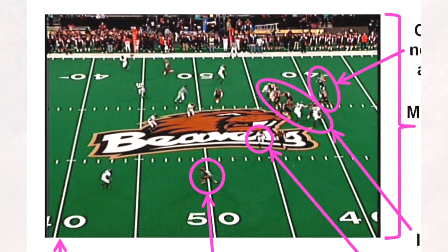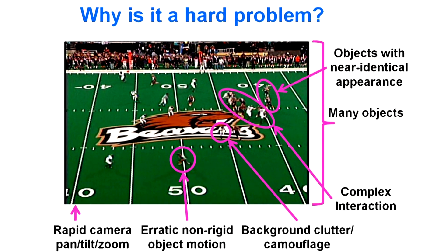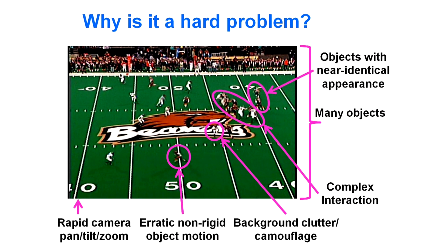Another thing that's very difficult is that the objects — the football players — move erratically. They move fast, they're unpredictable, and that is very confusing to a computer as well. All of these things basically mean that if you can solve this problem, you'll solve lots of other computer vision problems as well.